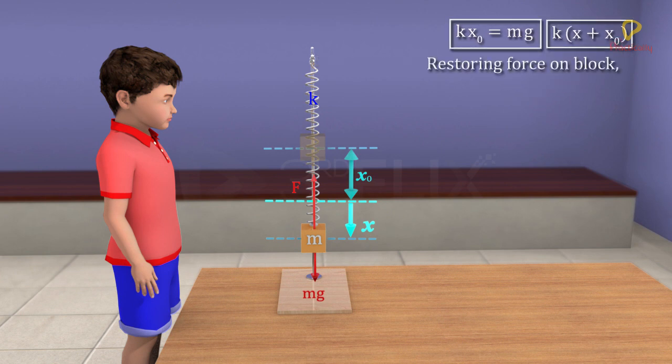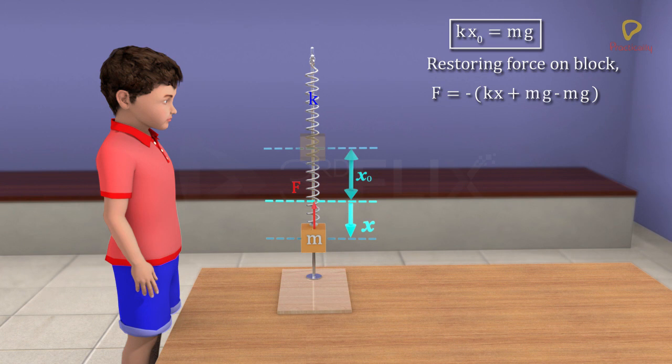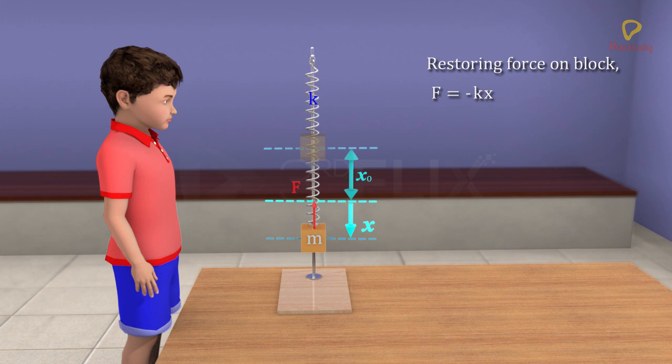So, restoring force on the block f is minus k times x plus x0 minus mg. Substituting kx0 equal to mg, f comes out to be minus kx.